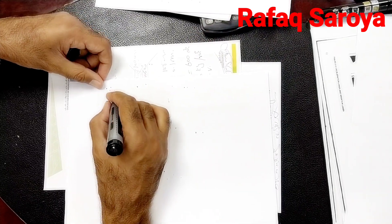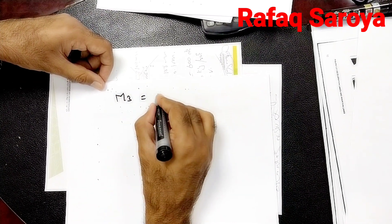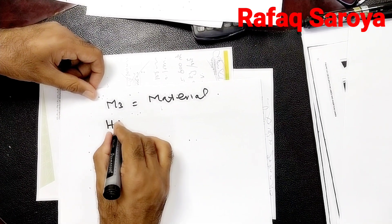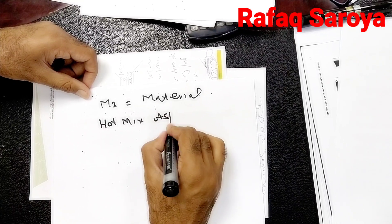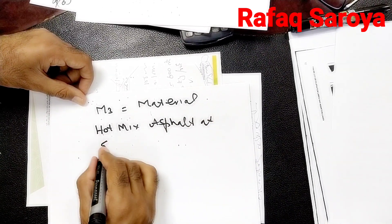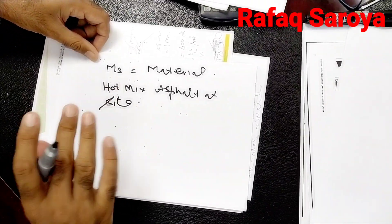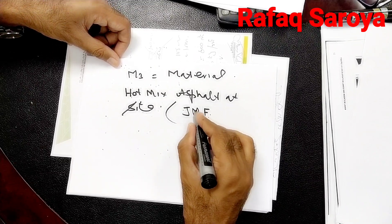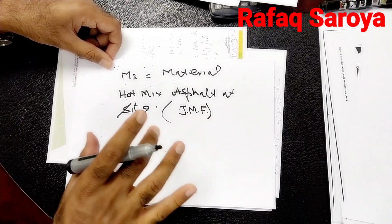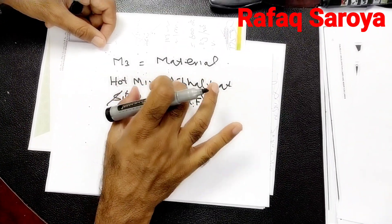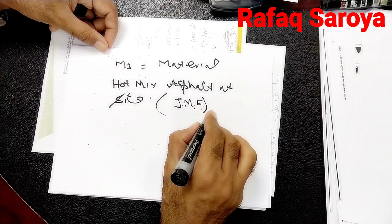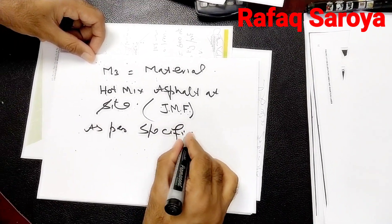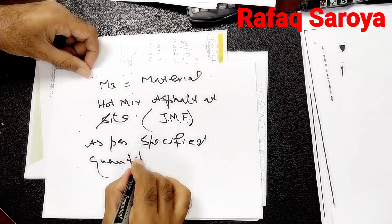After manpower, we come to M3, which is related to material. Material means we need hot mixed asphalt at site. When it is coming, it should be as per the job mix formula, because we have to check its quality. Hot mixed asphalt is the material which needs to be delivered as per the specified quantity required on site.